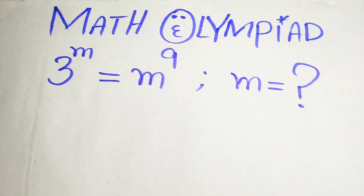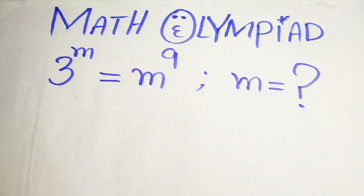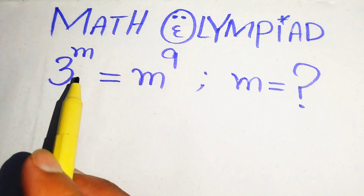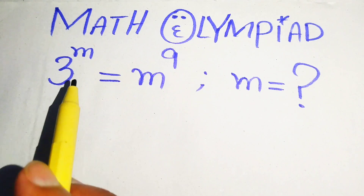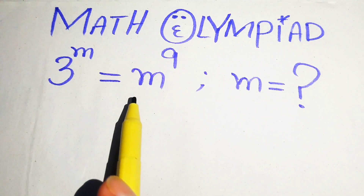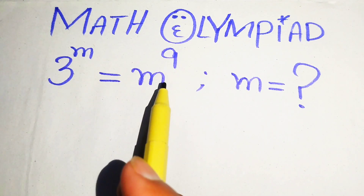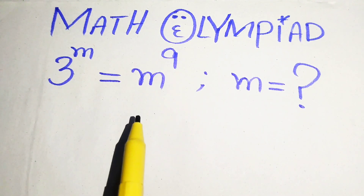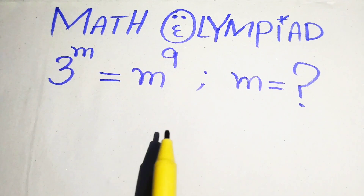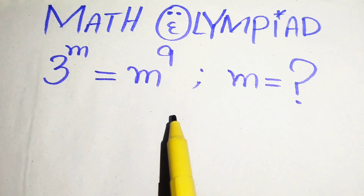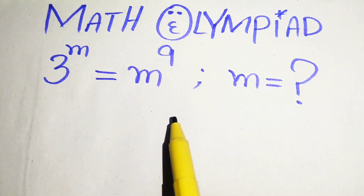Hello everyone, welcome. Let's solve this nice algebra problem. We have 3 to the power of m equals m to the power of 9, and we need to solve this for the values of m.